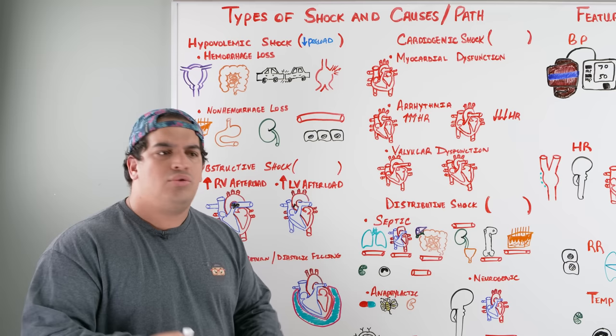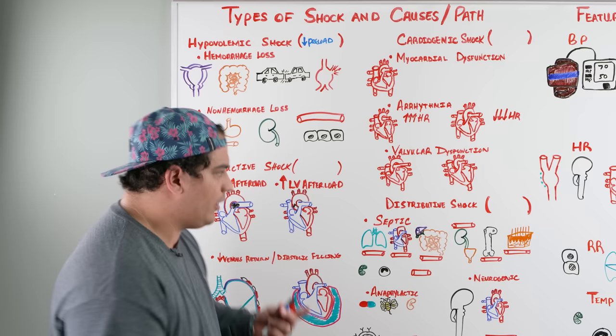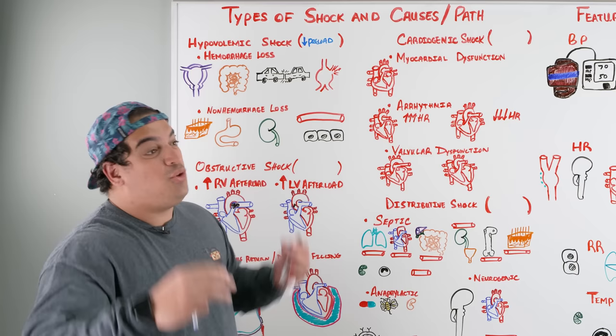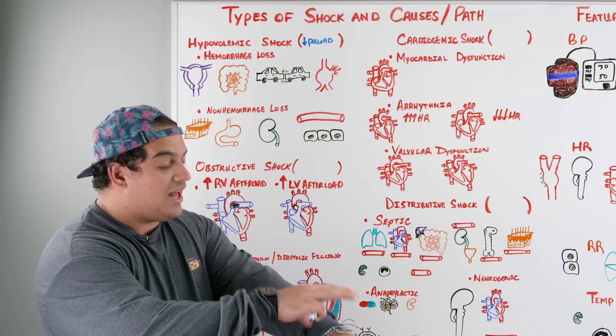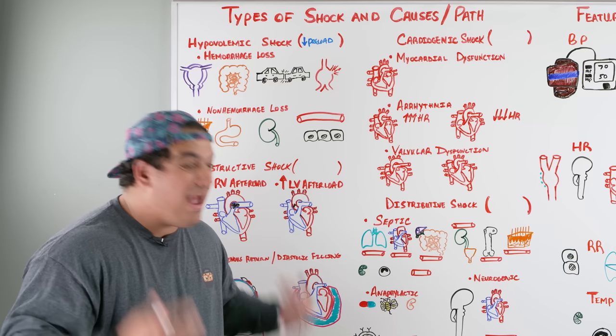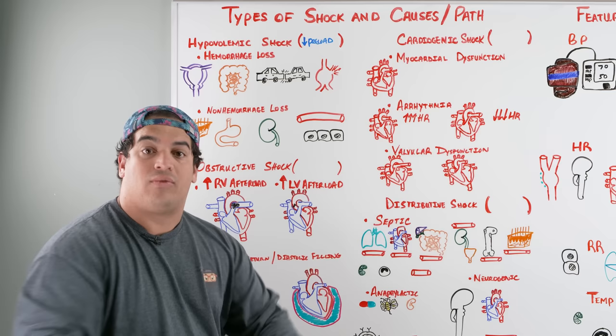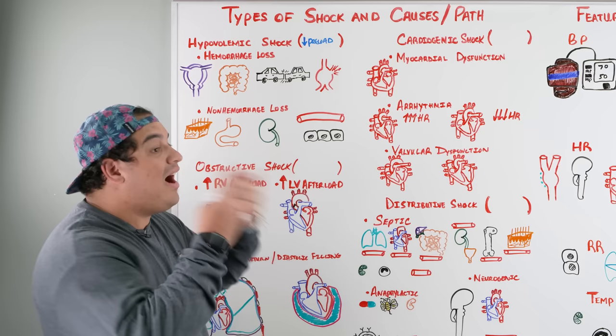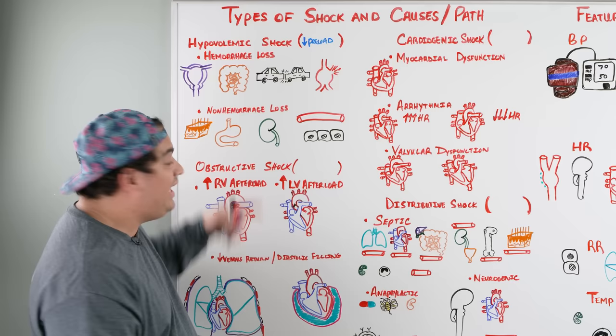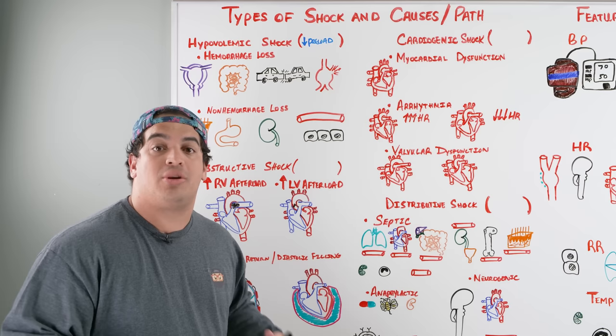Non-hemorrhagic losses involve losing plasma volume rather than blood. Think about massive burns, which destroy cells and release water, or uncontrollable fevers with constant diaphoresis causing large fluid losses. You can also lose volume through massive vomiting or severe diarrhea.